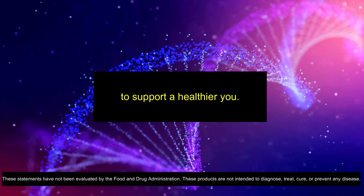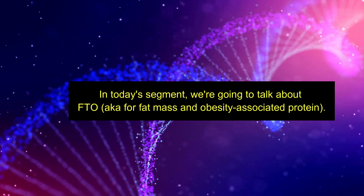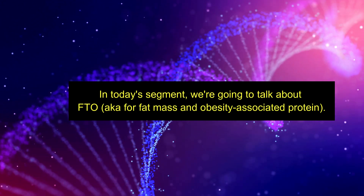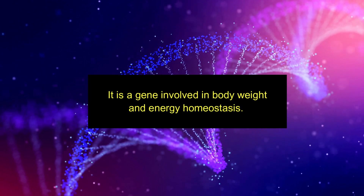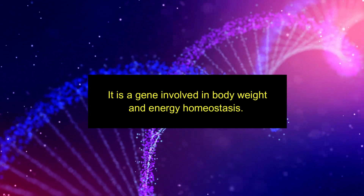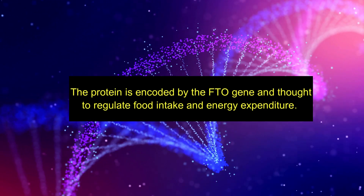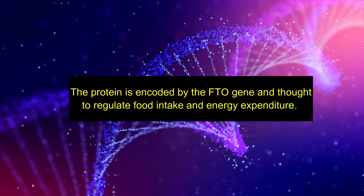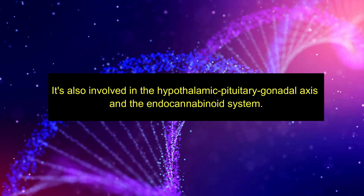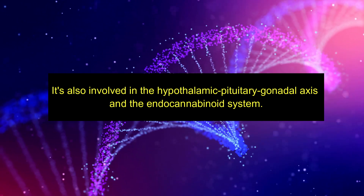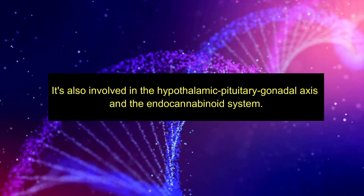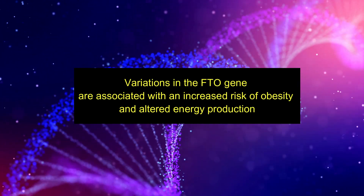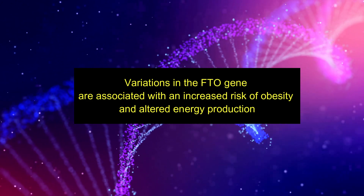In today's segment, we're going to talk about FTO, which stands for Fat Mass and Obesity Associated Protein. It is a gene involved in body weight and energy homeostasis. This protein is encoded by the FTO gene and is thought to regulate food intake and energy expenditure. It's also involved in the hypothalamic-pituitary-gonadal axis and the endocannabinoid system. Variations in the FTO gene are associated with an increased risk of obesity and altered energy production.